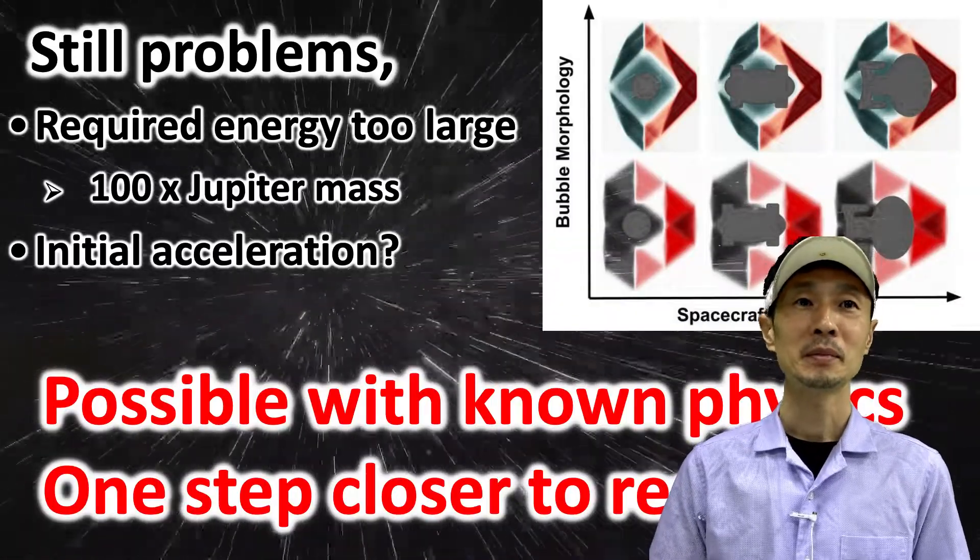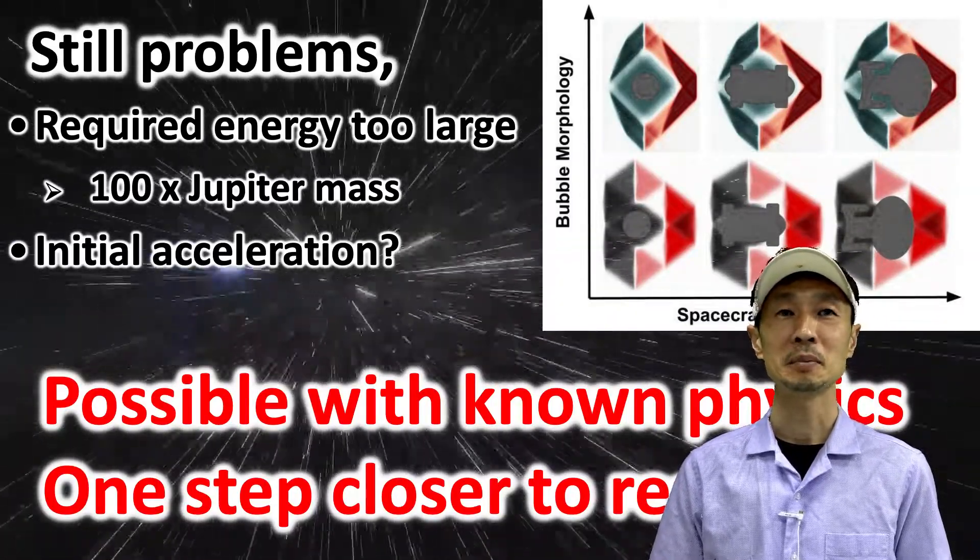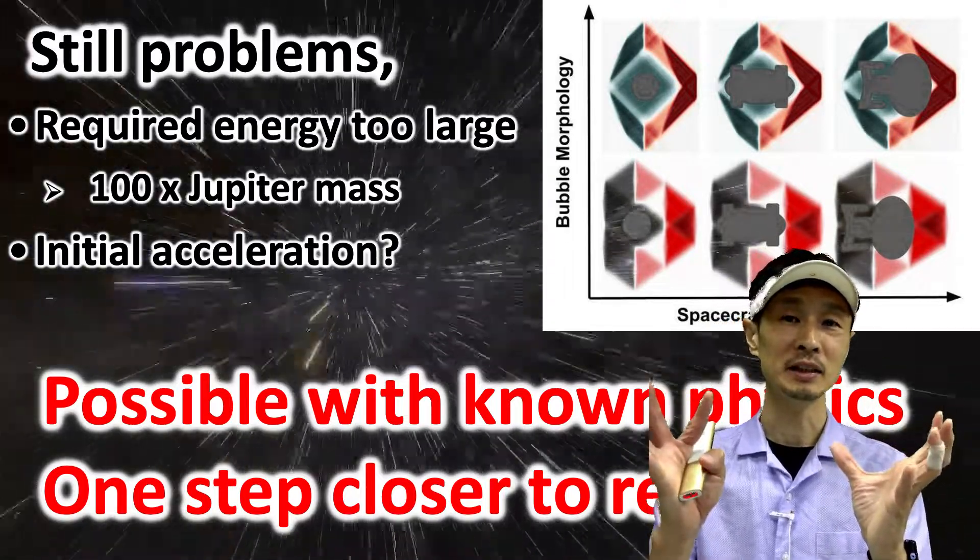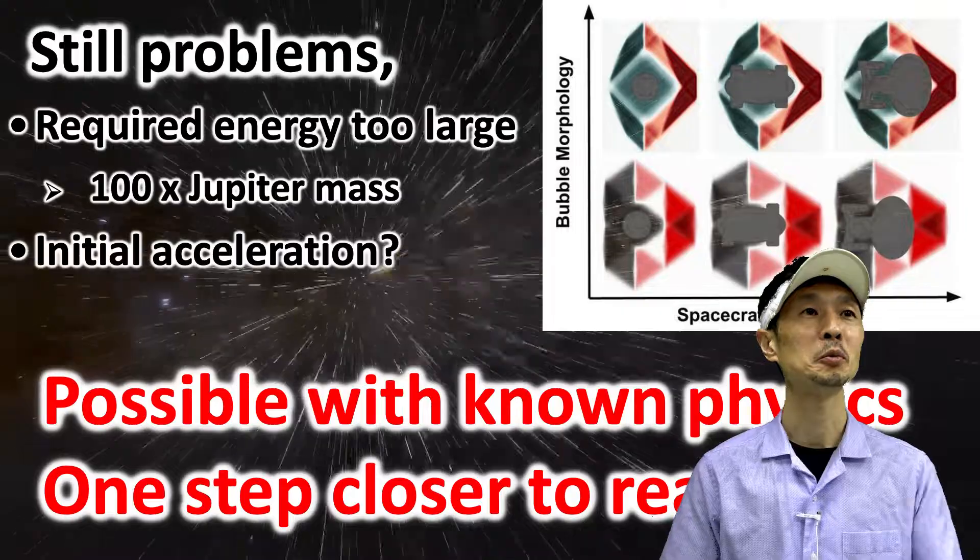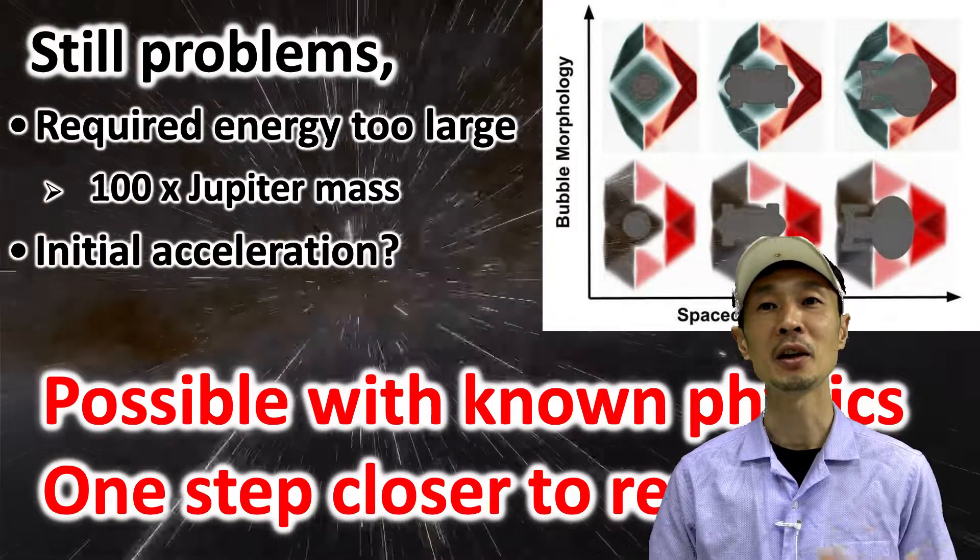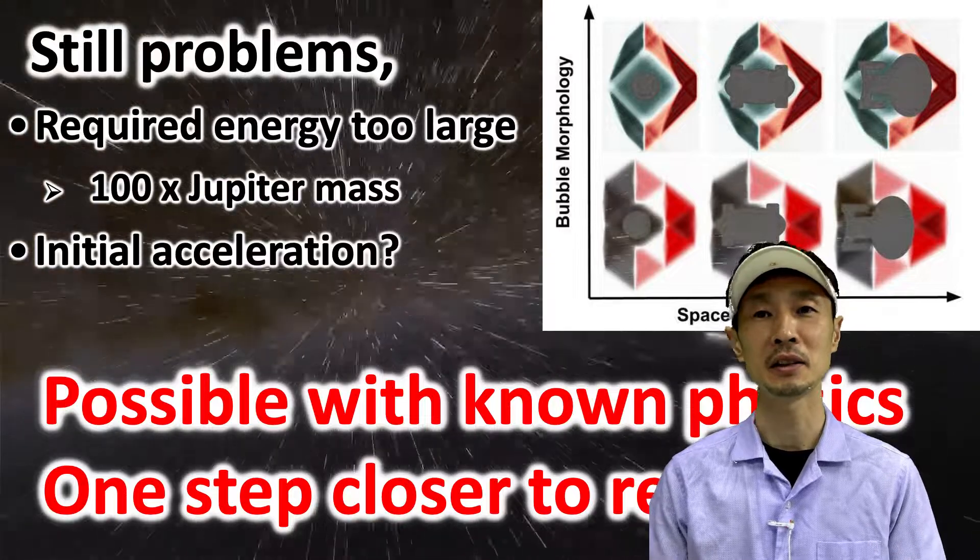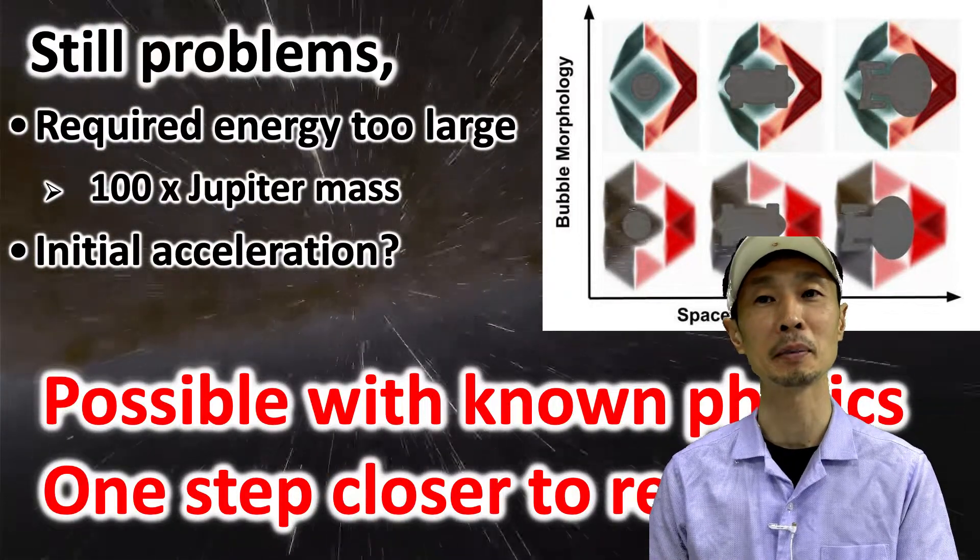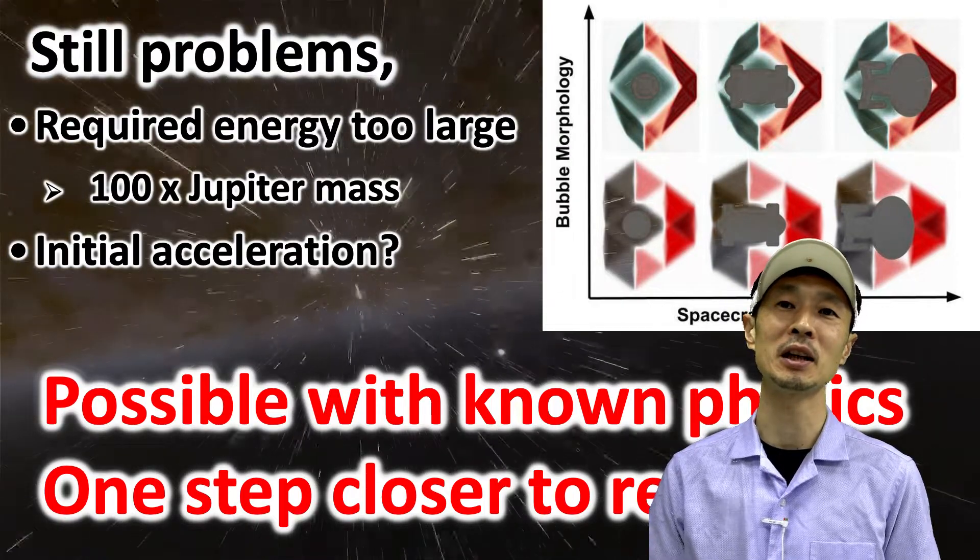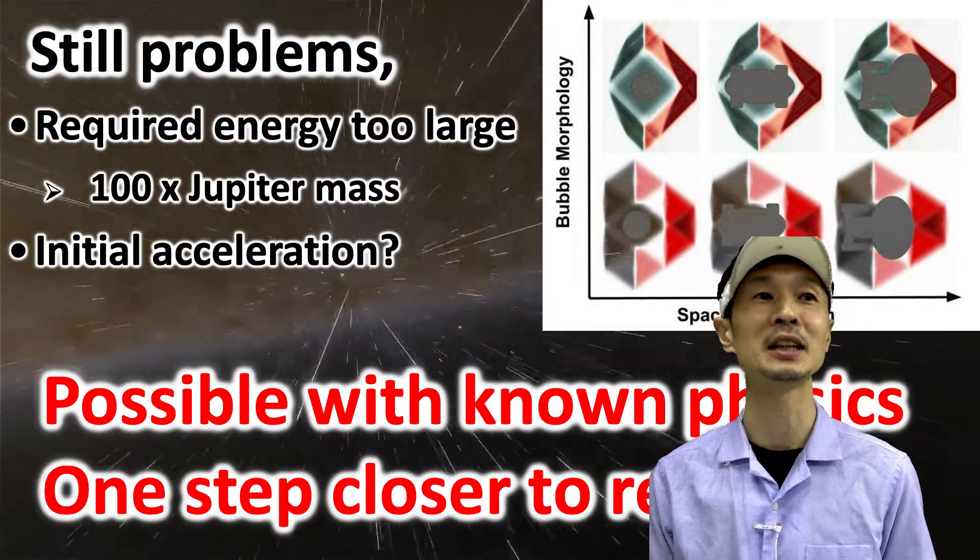There are still problems with Eric's paper. For example, the required energy to create this soliton warp bubble is 100 times Jupiter's mass. This is 30 orders of magnitude larger than energy we can create with a nuclear plant. It's still unreasonably large. We need to reduce energy requirements somehow.